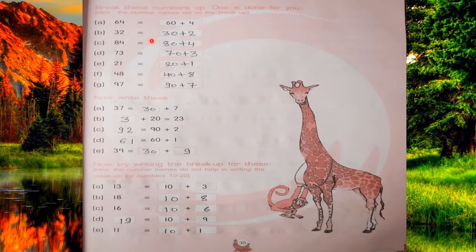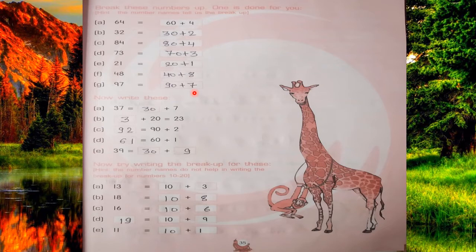32 means 30 plus 2. 84 means 80 plus 4. 73 means 70 plus 3. 21 means 20 plus 1. 48 means 40 plus 8. 97 means 90 plus 7. Clear? You have to write these numbers in separate form — tens part and ones part.